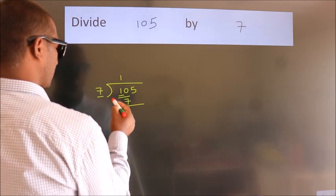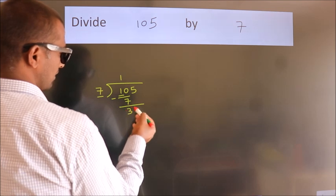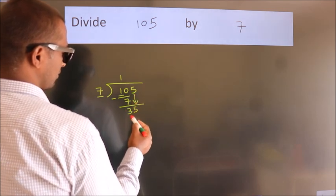Now, we should subtract. We get 3. After this, bring down the beside number. So, 5 down. So, 35.